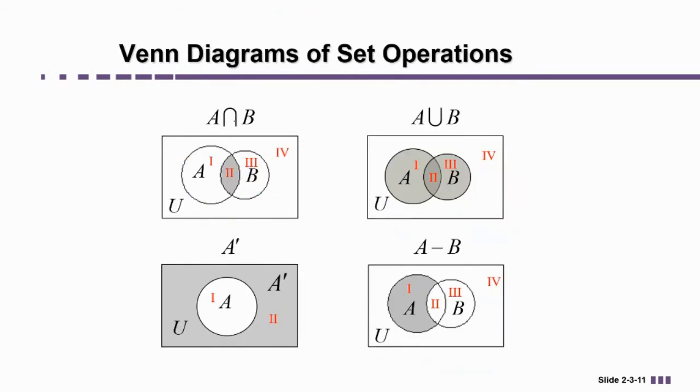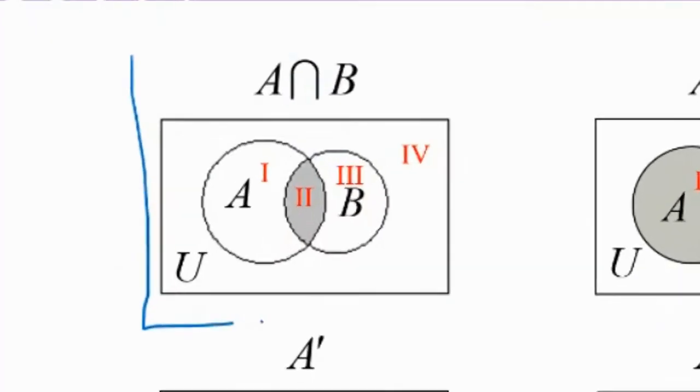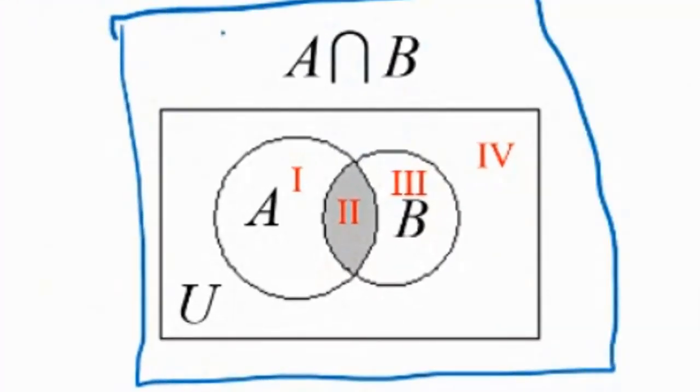Remember A intersect B we said was the overlap of the two sets. So here I have a Venn diagram representing A intersect B. The shaded region is a result of the set operation. I've numbered the regions 1, 2, 3, and 4. Region 1 is inside of A but not B. Region 2 is inside of both A and B.